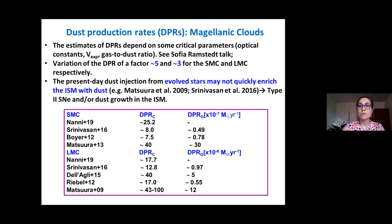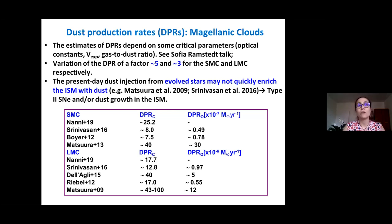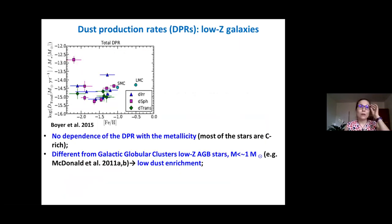Depending on the model assumptions, there is a variation up to a factor of five in the dust production rate. Even in the most optimistic cases, evolved stars may not enrich the interstellar medium with dust quickly enough to explain the amount of dust observed today in these galaxies, and so people have argued we need either Type II supernovae to replenish the ISM or dust grain growth in the interstellar medium.